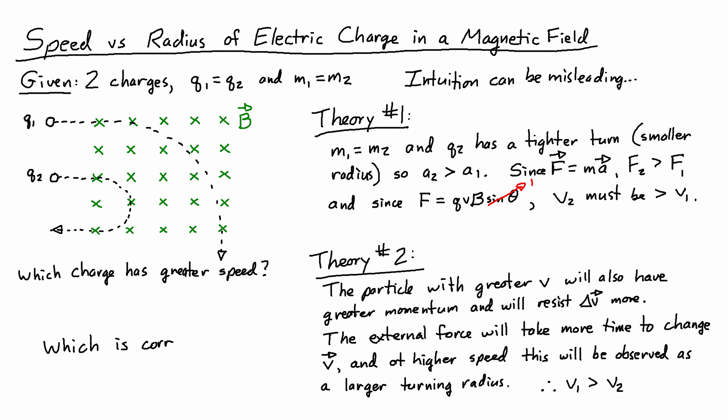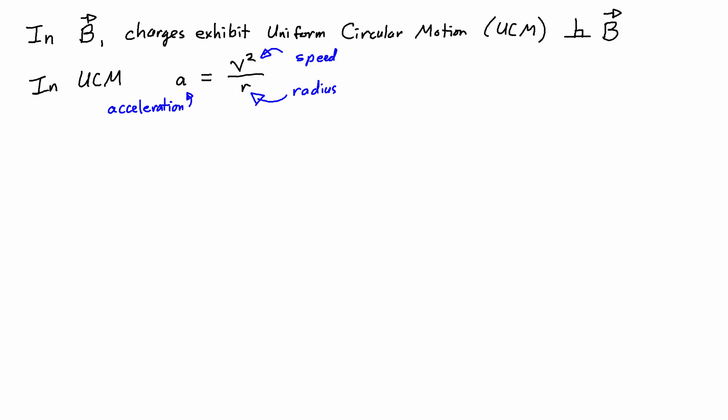So the question I'm asking you is which theory is correct? In the magnetic field, charges exhibit uniform circular motion in the plane perpendicular to B. And if you remember from mechanics, in UCM the centripetal acceleration towards the center was equal to the speed squared divided by the radius.